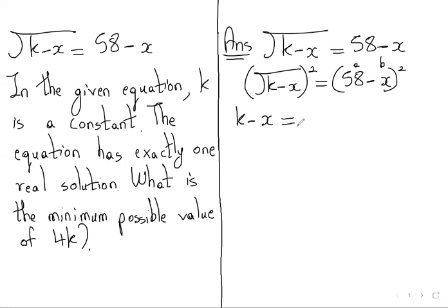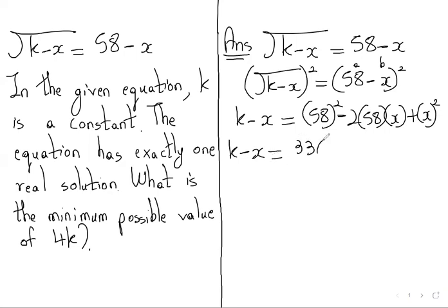We can use a minus b the whole square, that is a square—that is 58 square—minus 2 into a, that is 58, into b, x, plus b square, that is x square. So k minus x is equal to 58 square, which is 3364, then minus 2 into 58, which is 116x, plus x square.